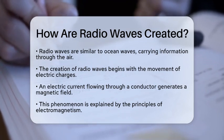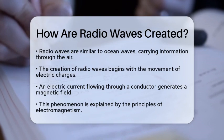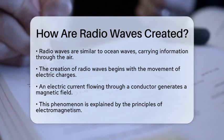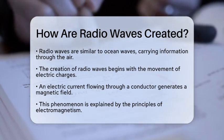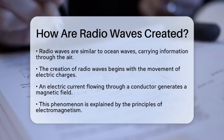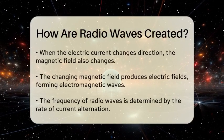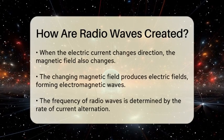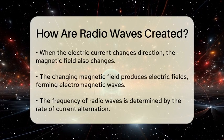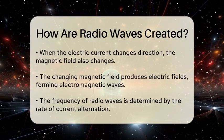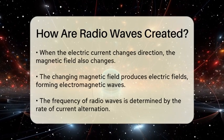At the heart of radio wave production is the movement of electric charges. When an electric current flows through a conductor, such as a wire, it creates a magnetic field around it. This phenomenon is described by the principles of electromagnetism. When the electric current changes direction, it causes the magnetic field to also change.